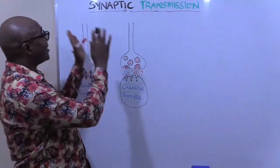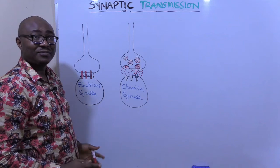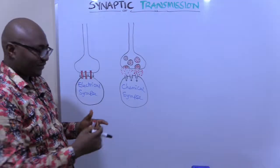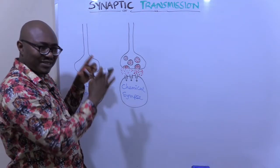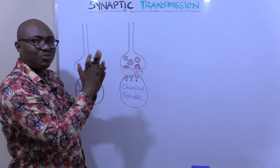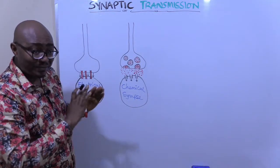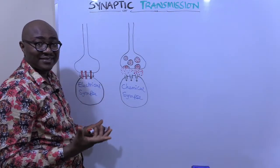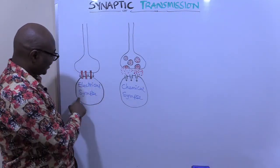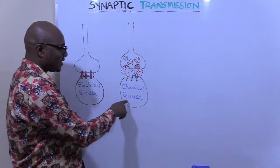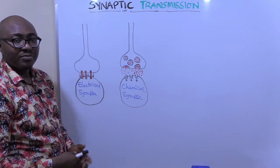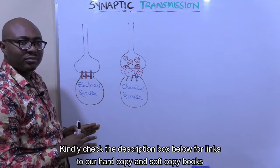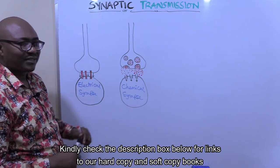Now let's get started. Today we are dealing with synaptic transmission. In case you don't know what a synapse is, a synapse is the junction between two nerves. There are two different types of synapses: electrical synapse and chemical synapse. But the usual synapse, the one that is most abundant in the body, is the chemical synapse.